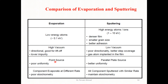In evaporation we have a point source, so as a result we can have poor uniformity. But in sputtering we have a parallel plate source and can have better uniformity. In evaporation, components evaporate at different rates, resulting in poor stoichiometry of the deposited thin film. In sputtering, all components sputter with similar rates, which ultimately maintains the stoichiometry of the deposited thin film.